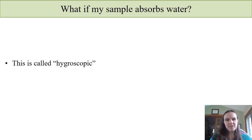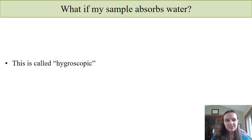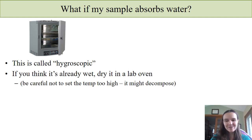So what do you do if your sample absorbs water? Absorbing water from the atmosphere is going to be bad when you're weighing it. This is called hygroscopic — you can determine if a material is hygroscopic by seeing that keyword. If your sample is already wet, you can dry it in a lab oven. Just be careful not to set the temperature too high, as your sample might decompose, so you might have to do a little research on that.